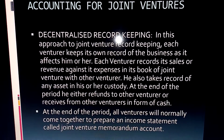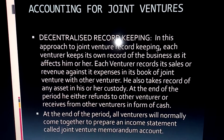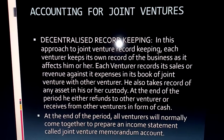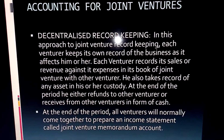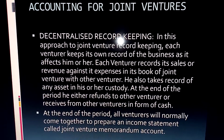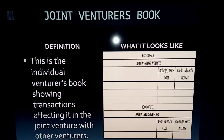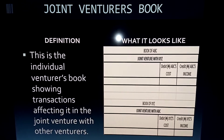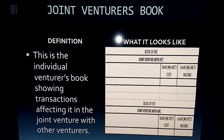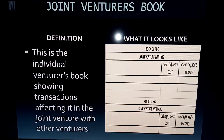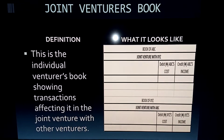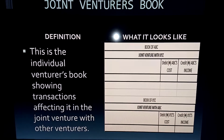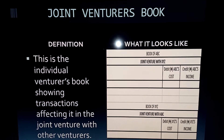At the end of the period, you bring your record, she brings her record, and together you prepare a joint memorandum account. In each venturer's book, you keep records traceable to you — the costs you've incurred and the incomes that came to you. For example, if ABC and XYZ are in a joint venture, the book of ABC shows: debit side — costs associated to ABC; credit side — income associated to ABC. The book of XYZ shows the same for XYZ.